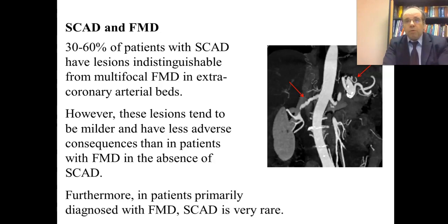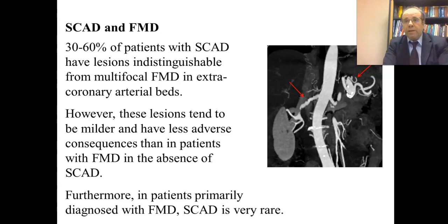If you have survived a myocardial infarction due to SCAD, you may have other extracoronary arterial abnormalities such as a string of beads, but these lesions tend seldom to cause severe complications. Furthermore, in patients primarily diagnosed with FMD, SCAD is very rare. So FMD-like lesions are frequent and usually of good prognosis in patients with SCAD, but if you have FMD of the renal or carotid artery, it is unlikely you will develop SCAD — it happens, but is very rare.